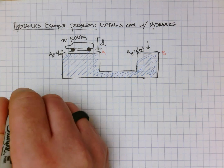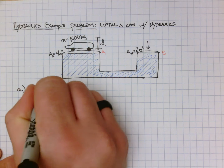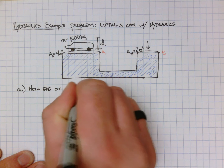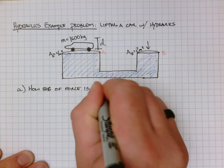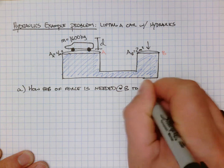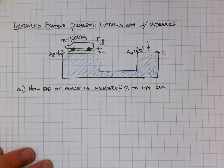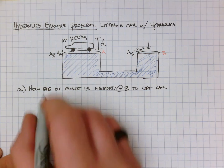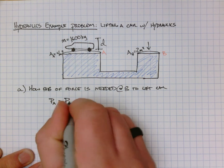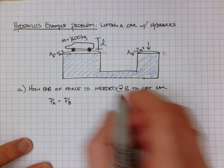The first thing we're going to look at is: how big of a force is needed at B to lift the car? Pascal's principle tells us that the pressure at A is going to be equal to the pressure at B. So first, if we can understand what the pressure at A is.